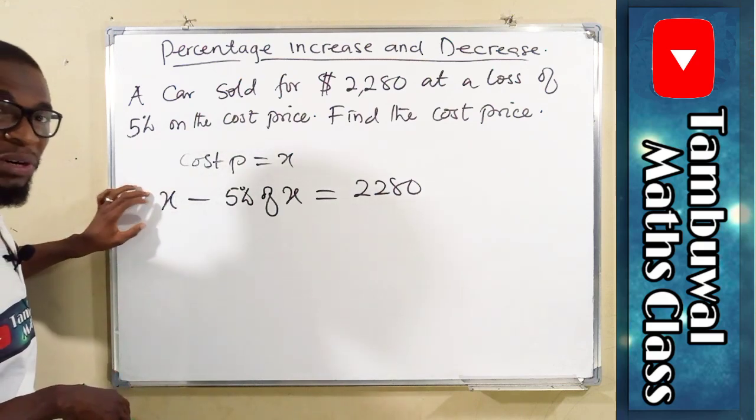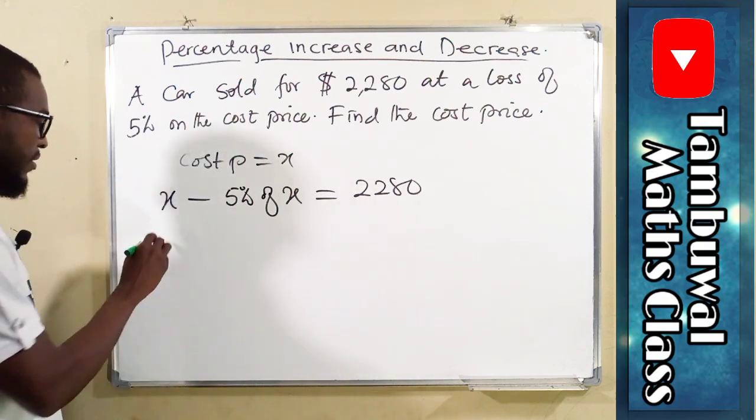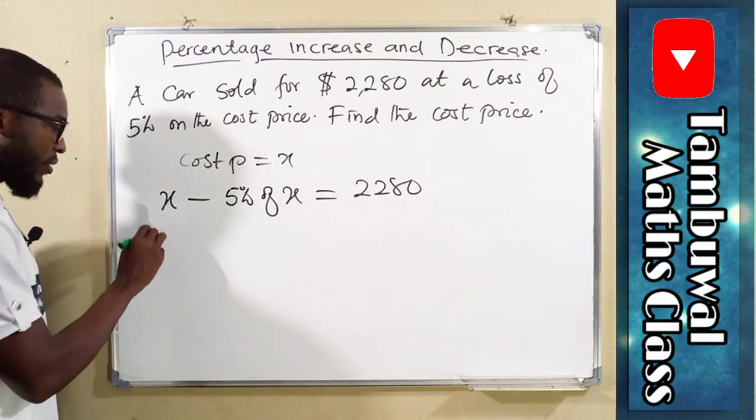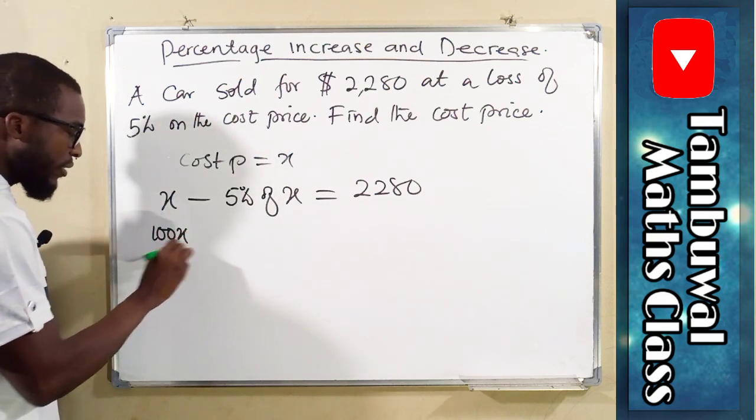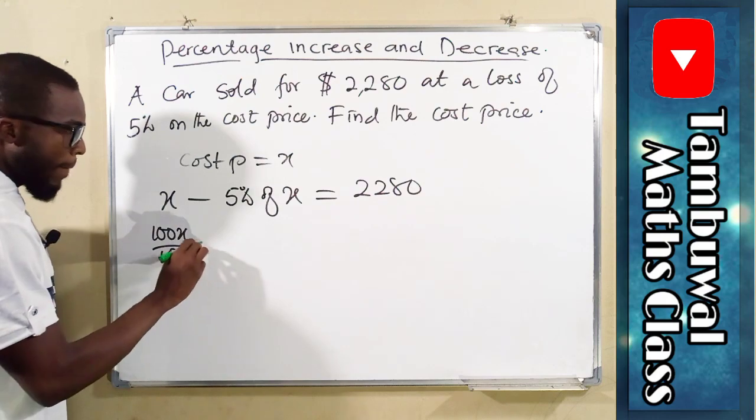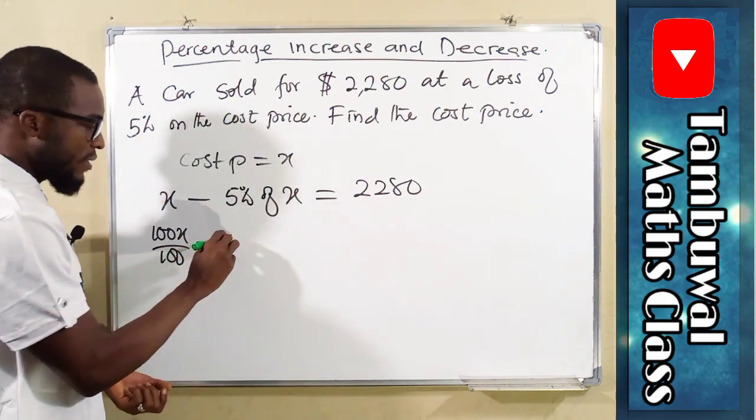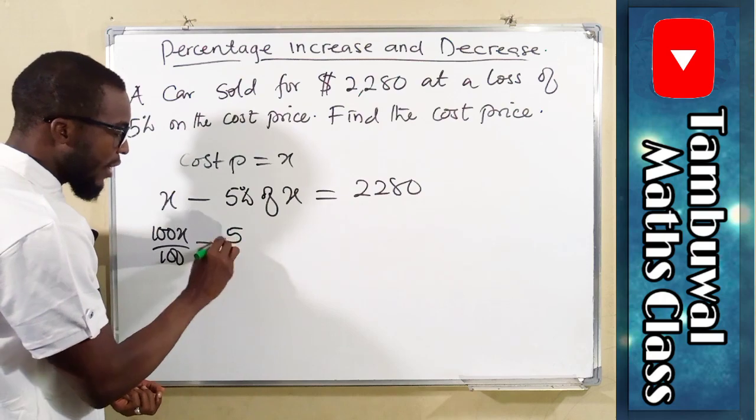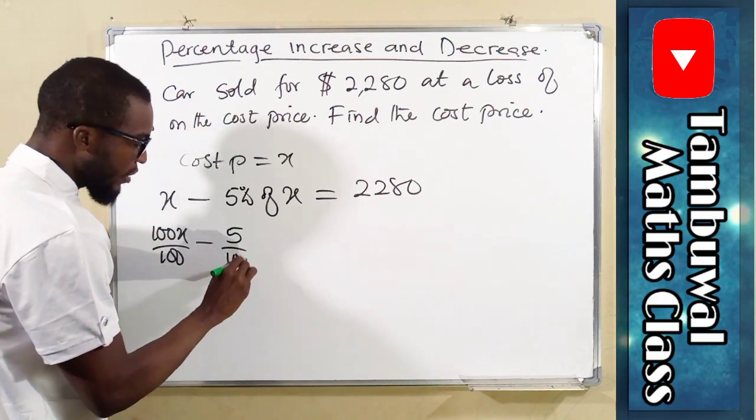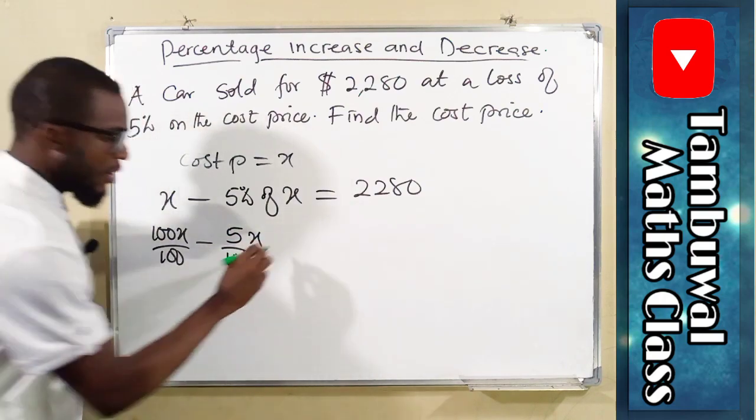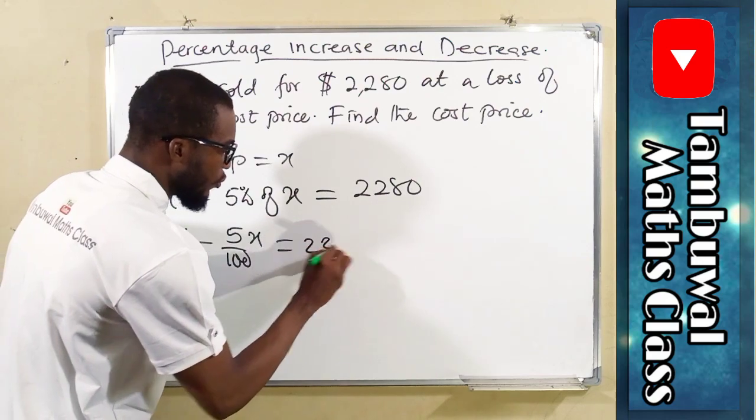This can be seen as 100%. So this is 100x over 100, minus 5% of x, which is the same thing as 5 out of 100 of x, and this is equal to 2,280.